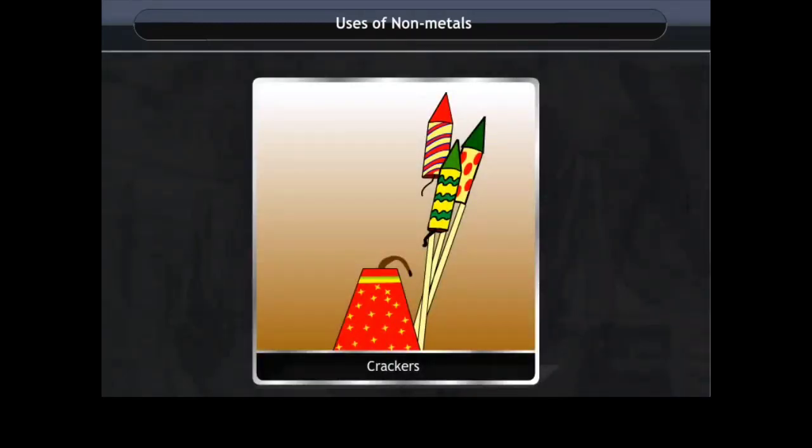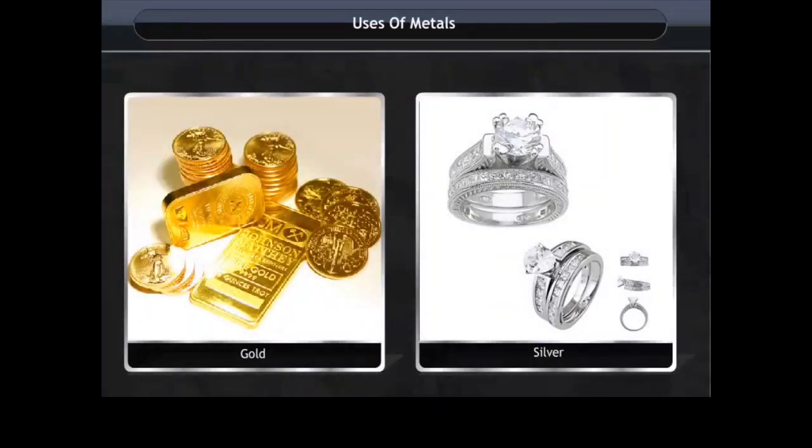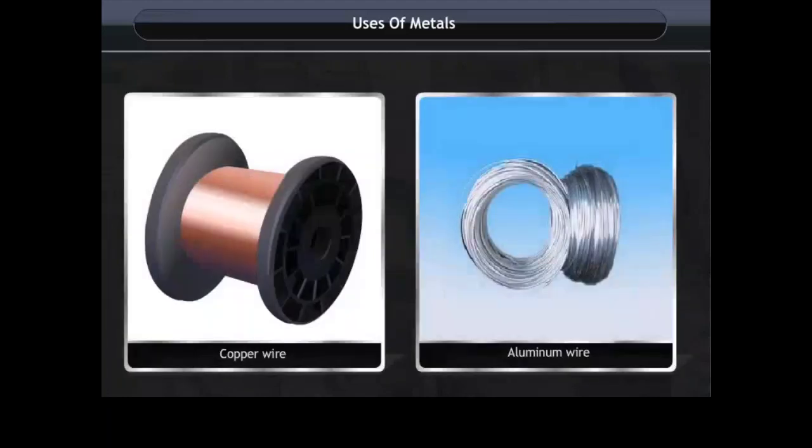Uses of metals: Metals such as gold and silver are very shiny in appearance. These metals are also ductile and malleable in nature, hence these metals are useful in making jewelry. Metals such as copper and aluminum are used to make wires as they are very good conductors of electricity.